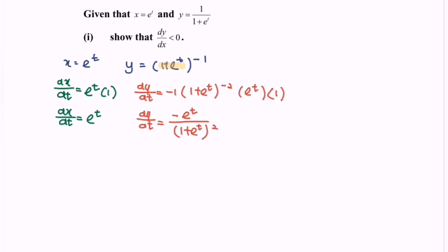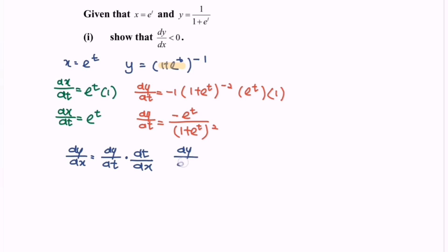Next is to find dy/dx. So dy/dx is equals to negative e to the power of t over 1 plus e to the power of t, bracket squared.